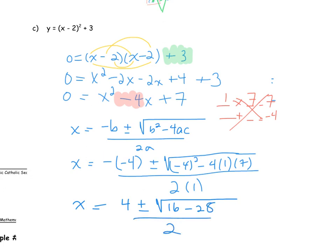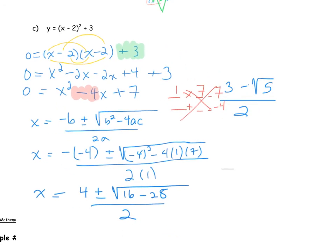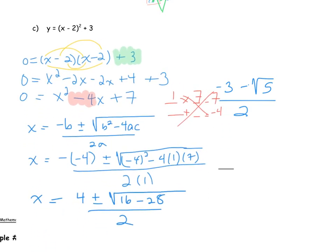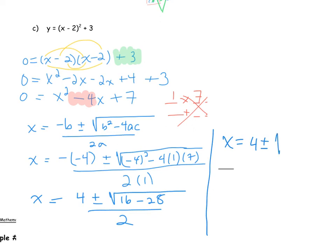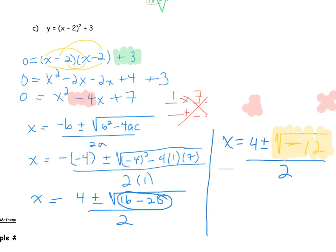An interesting thing happens when I simplify: x = 4 plus or minus the square root of 16 minus 28, which gives me negative 12 under the root, divided by 2. If you type negative 12 into your calculator and take the square root, you'll get a big error — because we cannot take the square root of a negative number.